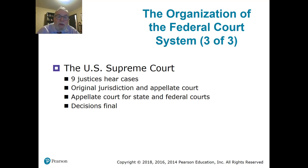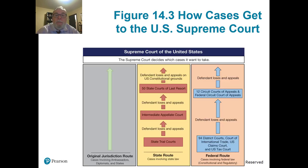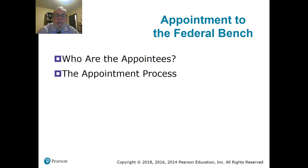The U.S. Supreme Court is nine justices who hear cases. They can hear original jurisdiction, though that's pretty rare, and for the most part they get appellate jurisdiction — from both the federal court system and the state court system. Their decisions are final. You have the original jurisdiction route, the state route that works through an entire state system and hops over, and the federal route from the 94 districts through the 12 circuits.